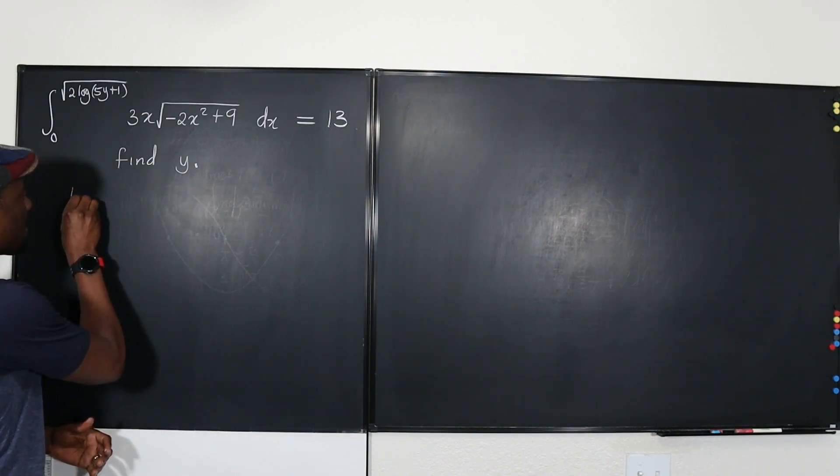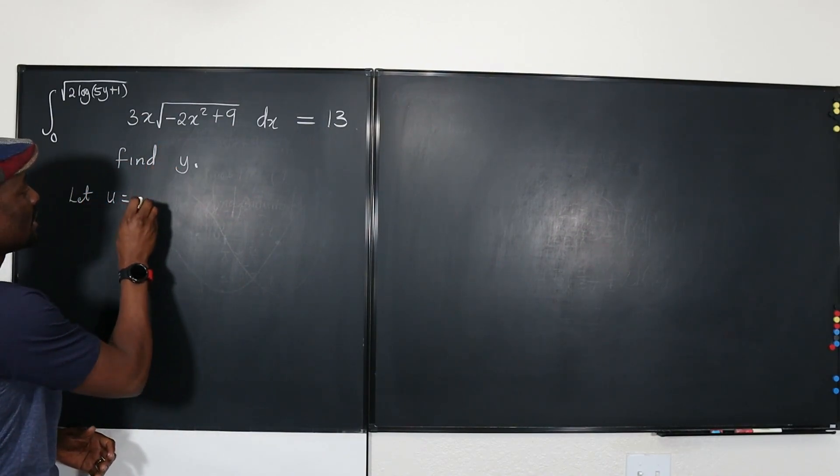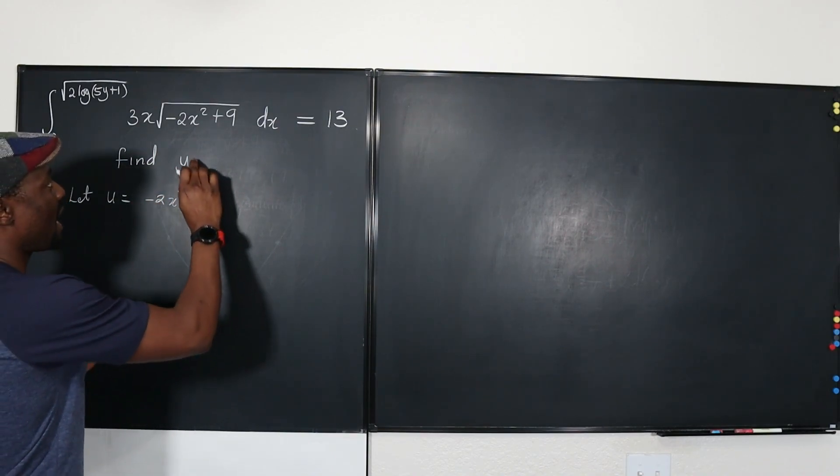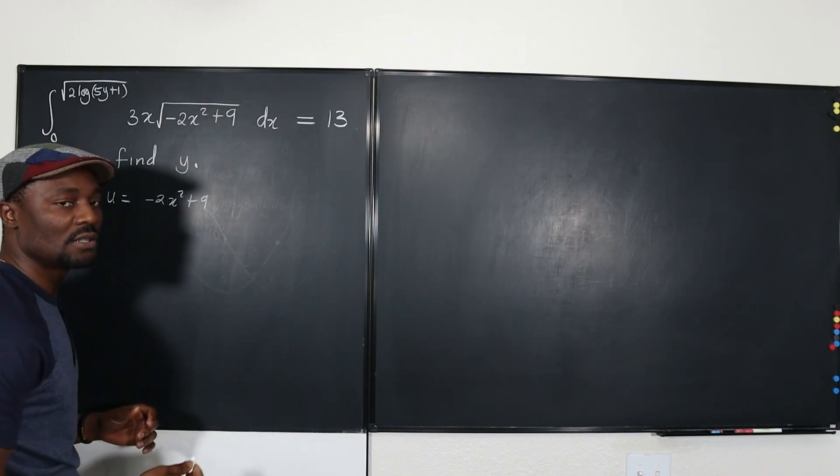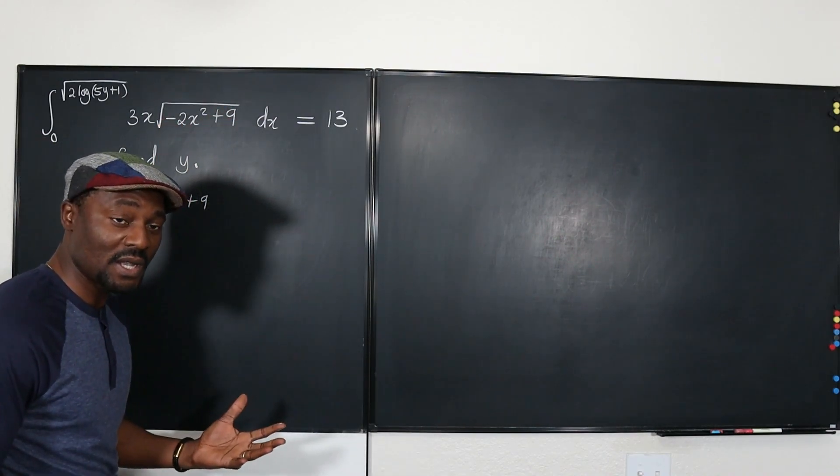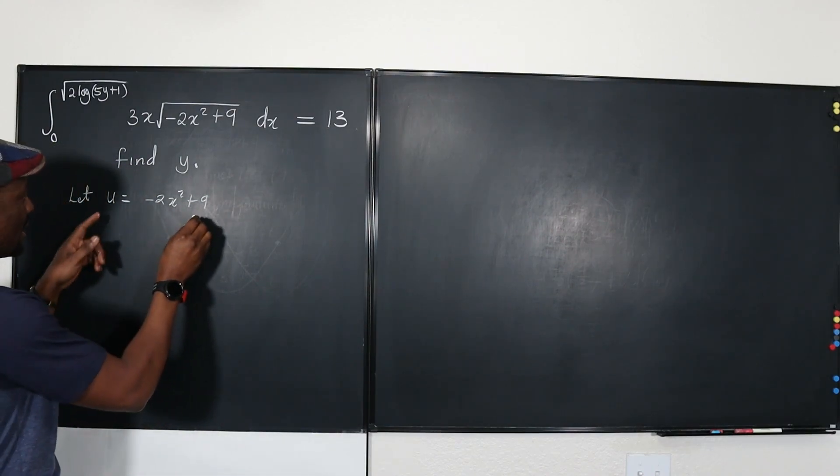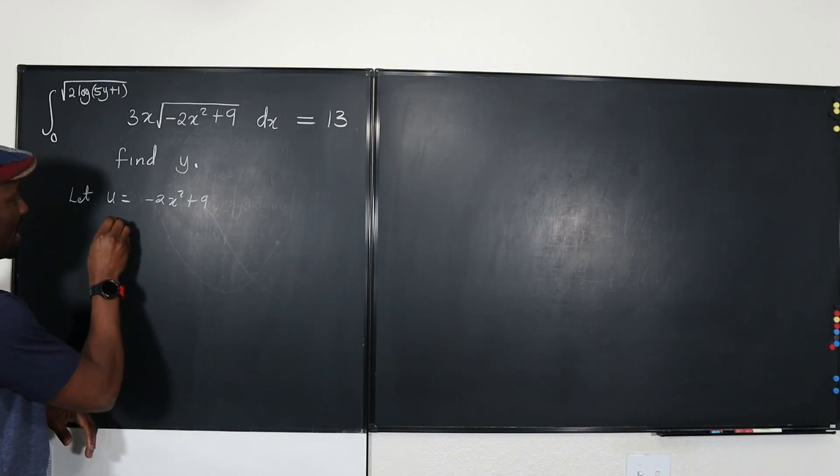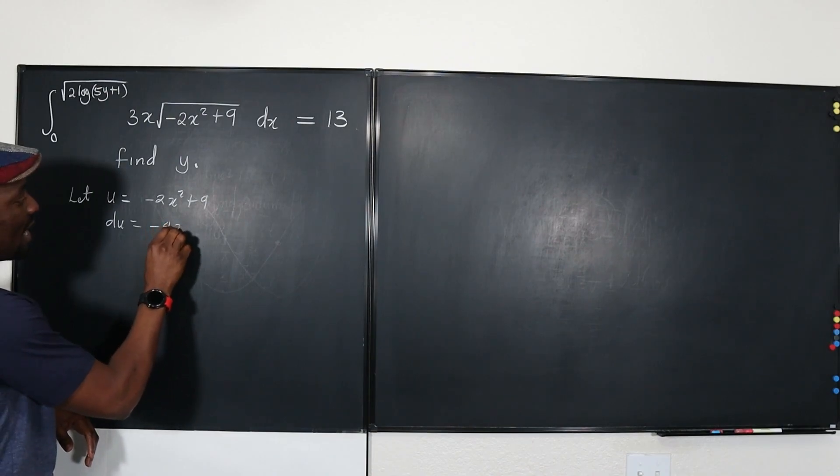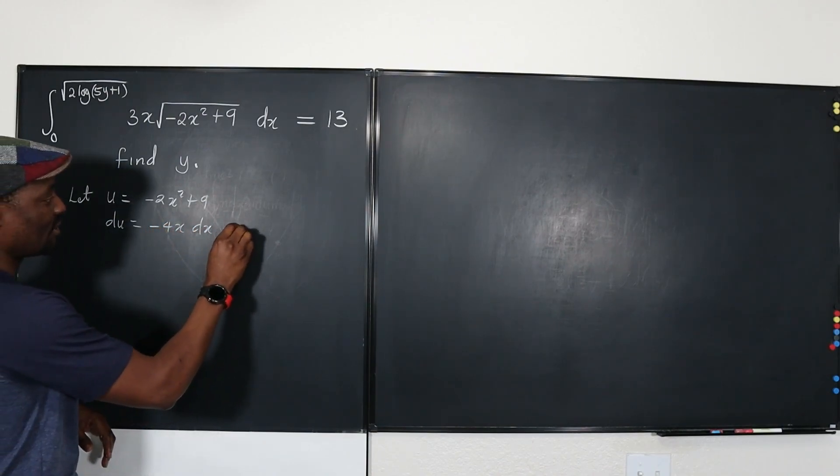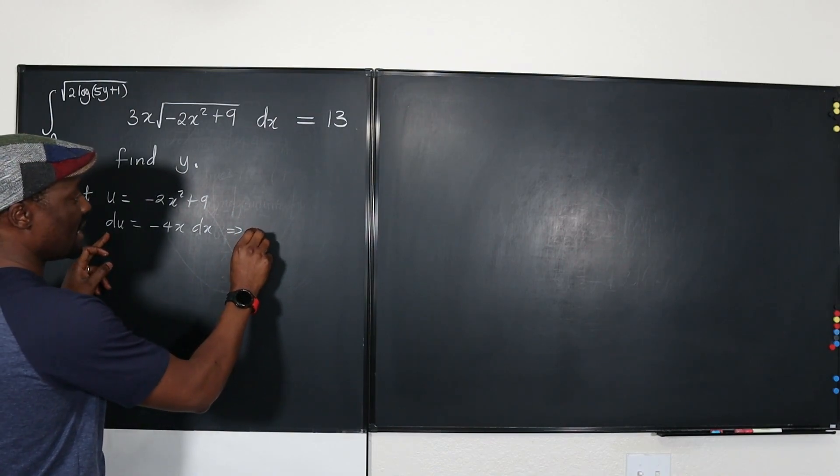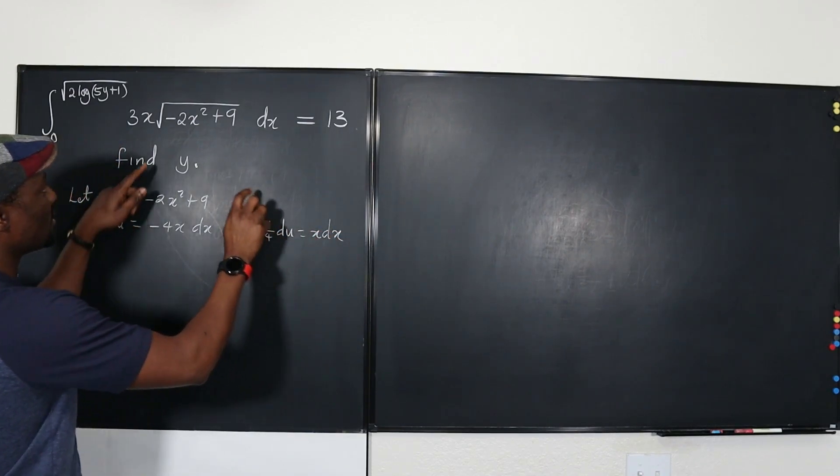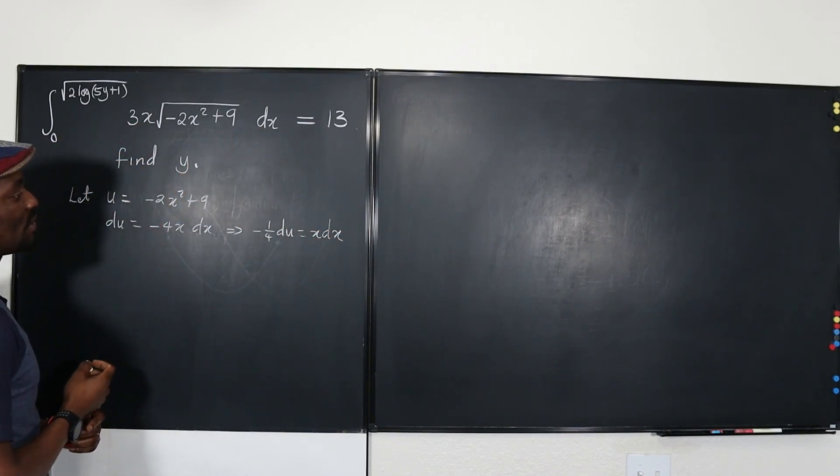So we're going to say, let u be equal to negative 2x squared plus 9. That's how I like doing my u substitution, just using what's under the radical sign, or what is confined. And from here, because I know I'm going to need, well, I don't need anything extra. So what's my du? du is going to be negative 4x dx, which tells me that negative 1 over 4 du equals x dx. So now I have x dx here, and I can do my u substitution.